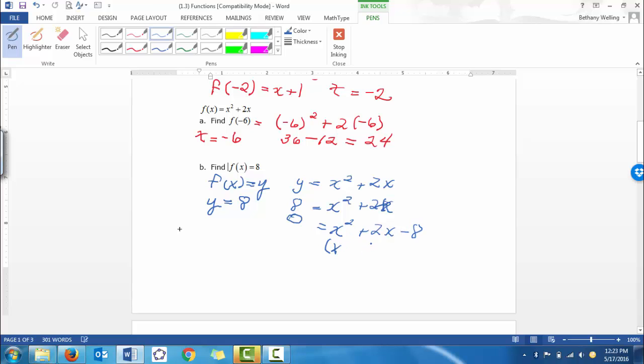So x and x. And then factors of negative 8 that add up to positive 2 would be plus 4 and minus 2. And that's equal to 0.